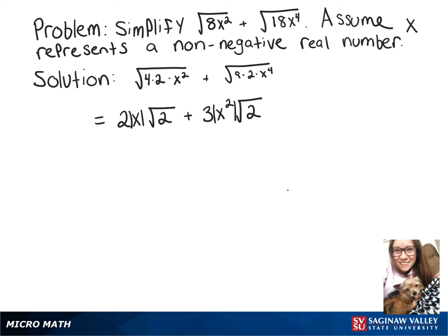So since both of these things are being multiplied by the square root of 2, we can add those first parts together. So in parentheses, we have 2x plus 3x squared, all of that multiplied by the square root of 2.